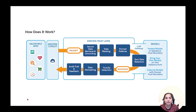Hello guys, welcome back. In this tutorial we are going to continue our learning about the Einstein Trust Layer. The Einstein Trust Layer basically consists of three main things. One is called the prompt journey, which is basically the journey of the prompt when it is initiated from Salesforce apps. Before it reaches the large language model it goes through certain steps: secure data retrieval and grounding, data masking, and prompt defense.